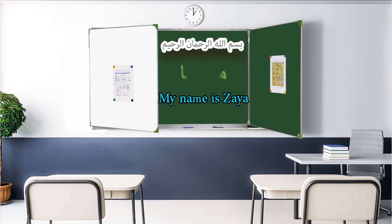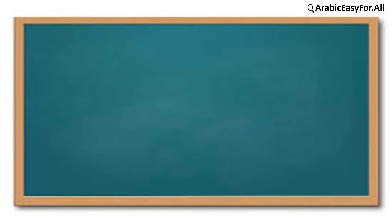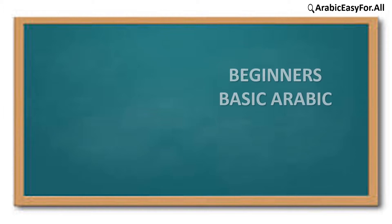مرحبا أنا اسمي زايا. This is Arabic Easy for All Beginners — Basic Arabic Courses, Lesson 1, Part 4: ألف با تا ثا — double signs.